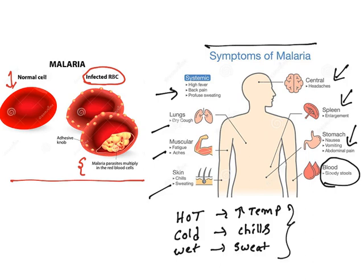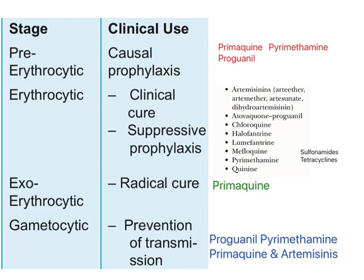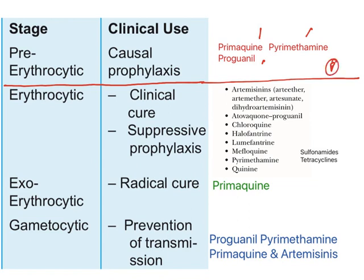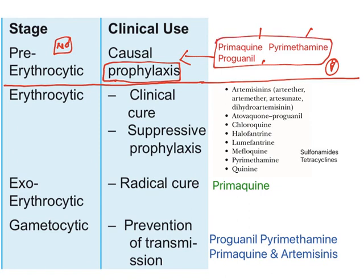Based on the stages, drugs are used accordingly. For the pre-erythrocytic stage, where people do not show symptoms, the drugs used are primaquine, pyrimethamine, and proguanil — all three P's. This is known as causal prophylaxis. Prophylaxis means using drugs to treat the disease before symptoms appear, so these drugs are called causal prophylactic drugs.